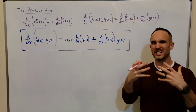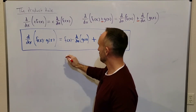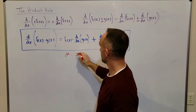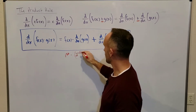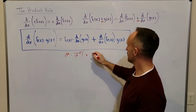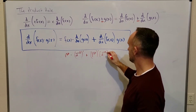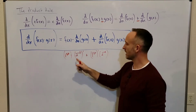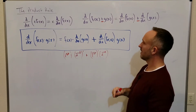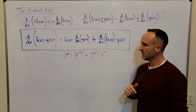Sometimes we put little sayings with these rules to help us remember them. We say: take the first times the derivative of the second, plus the derivative of the first times the second. I will often interchange the order that I do these in.